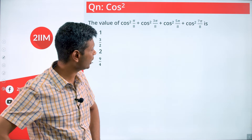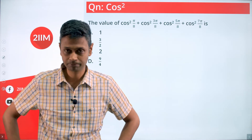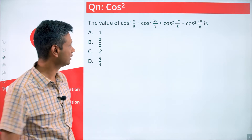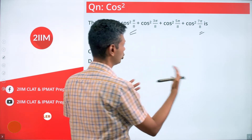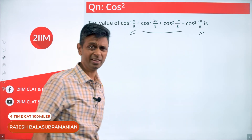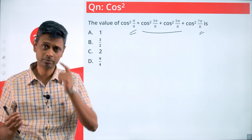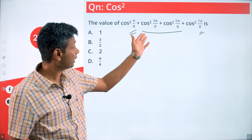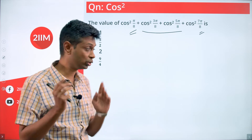We have cos²(3π/8) + cos²(5π/8) + cos²(7π/8). The first thing to notice is that π/8 and 7π/8 need to be put together, and 3π/8 and 5π/8 need to be put together — because π/8 + 7π/8 = π, and 3π/8 + 5π/8 = π.